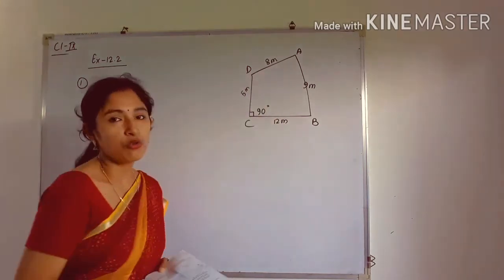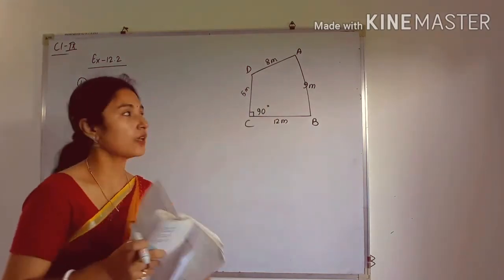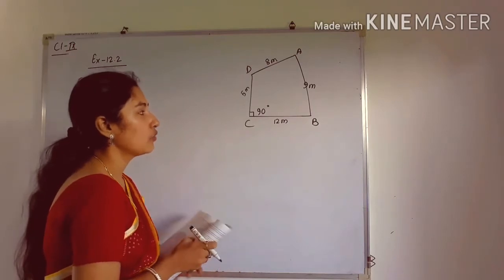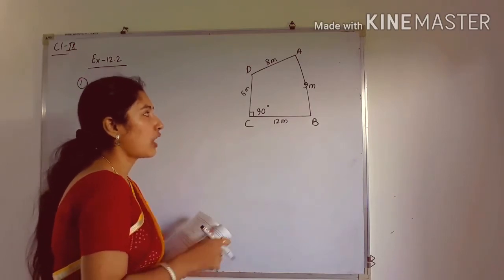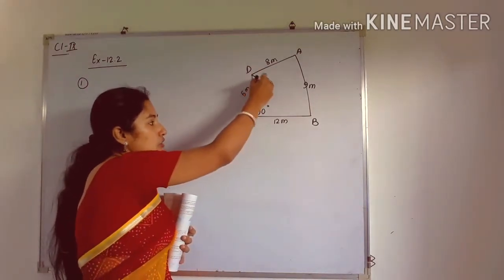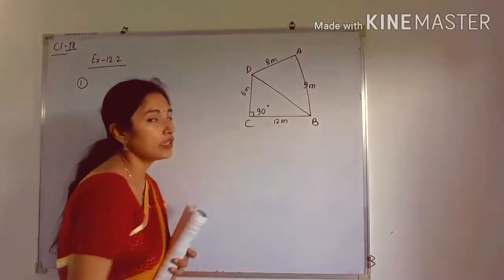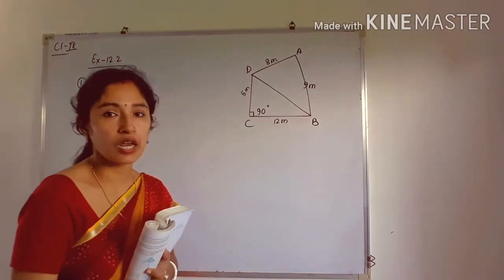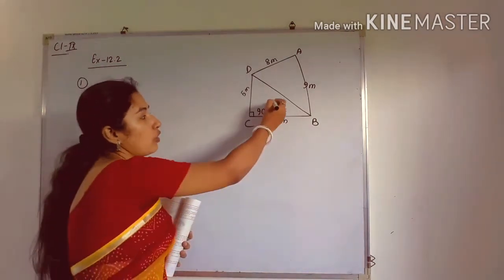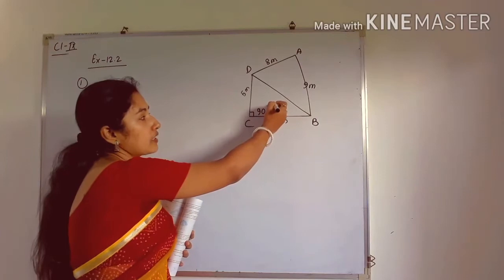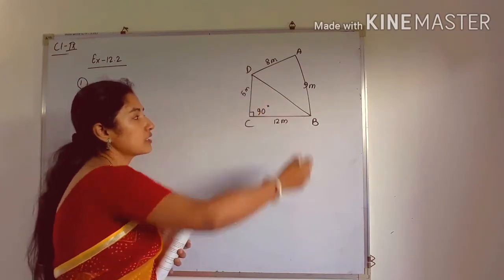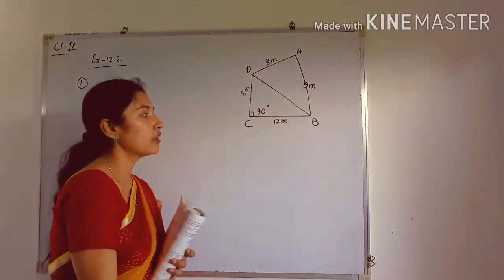To find this area, if you join B with D, you will get two triangles. After joining BD, we get two triangles, and one of them — triangle BCD — is a right angle triangle.